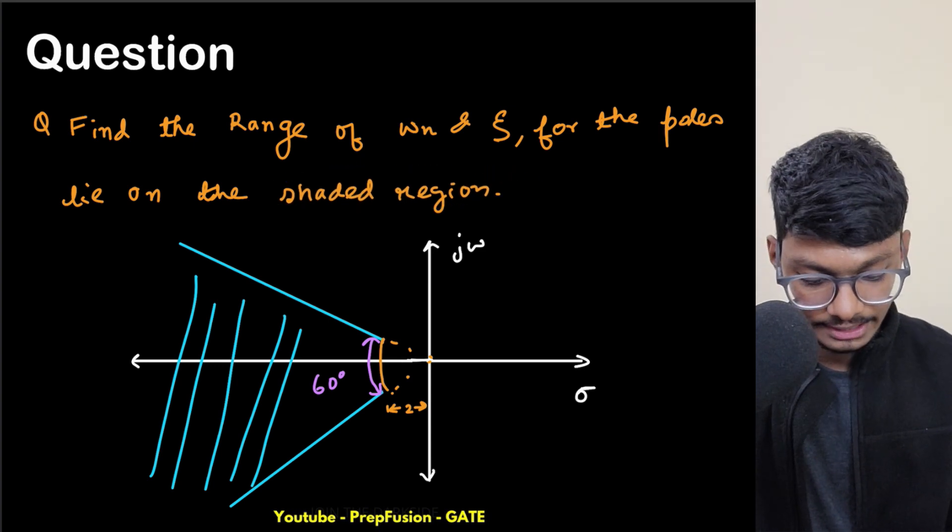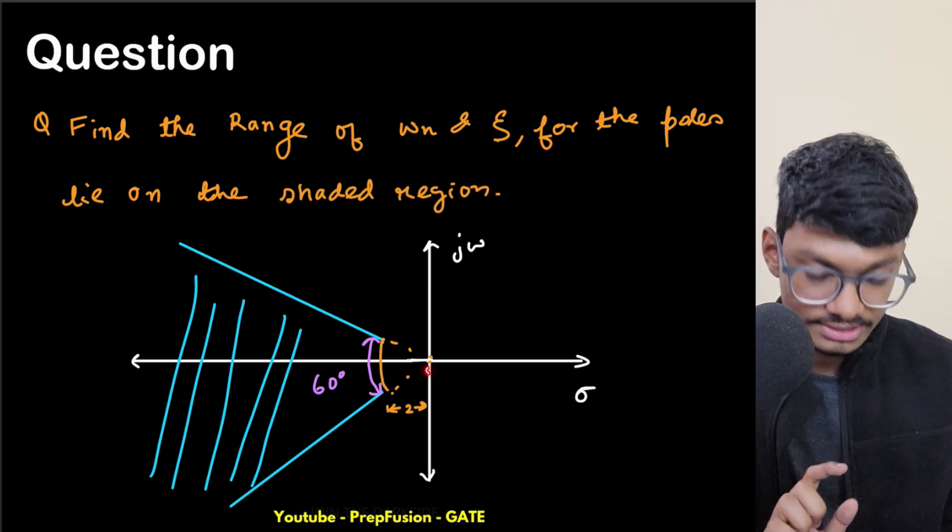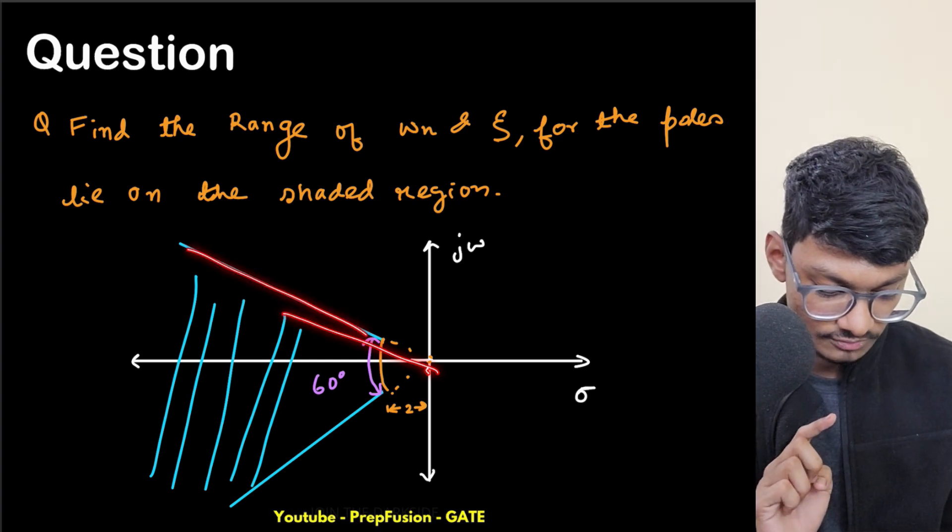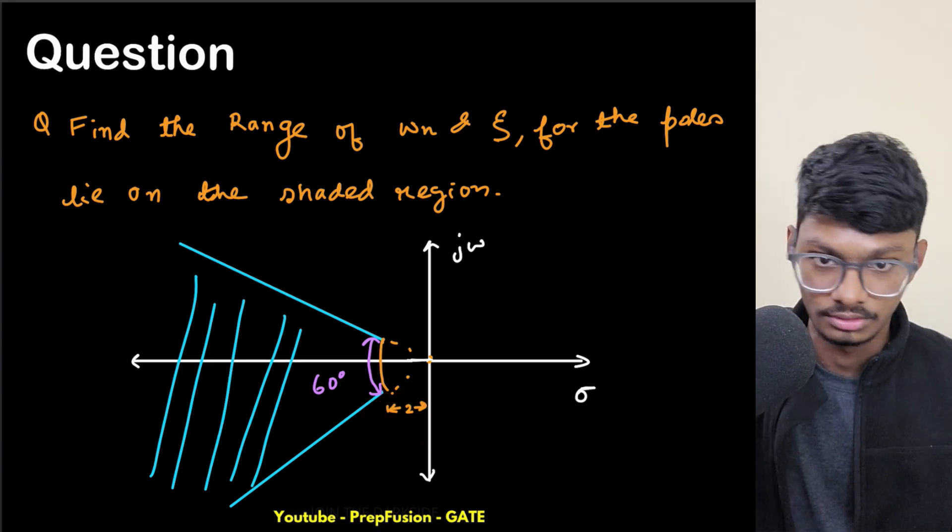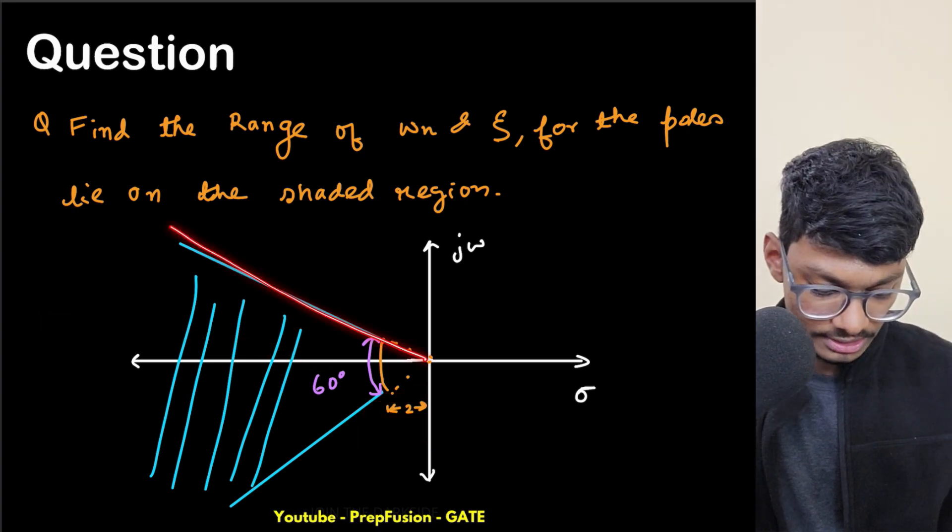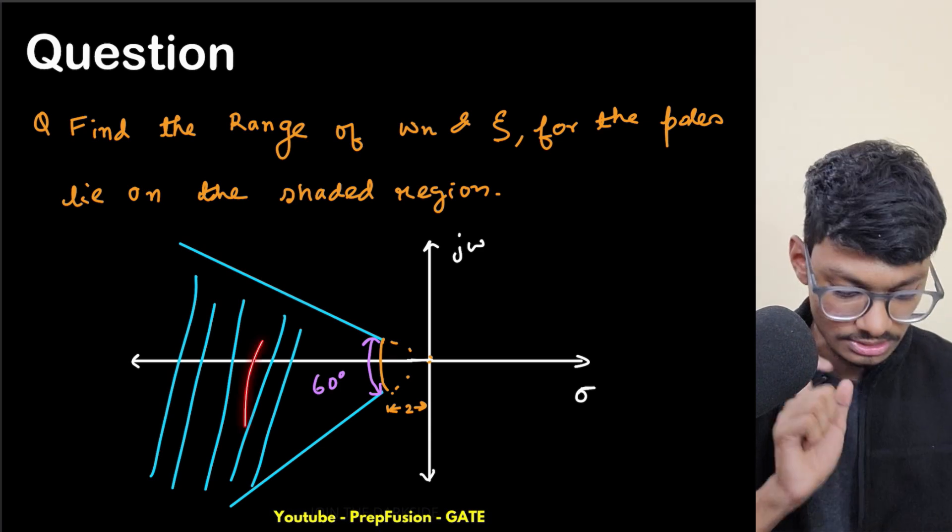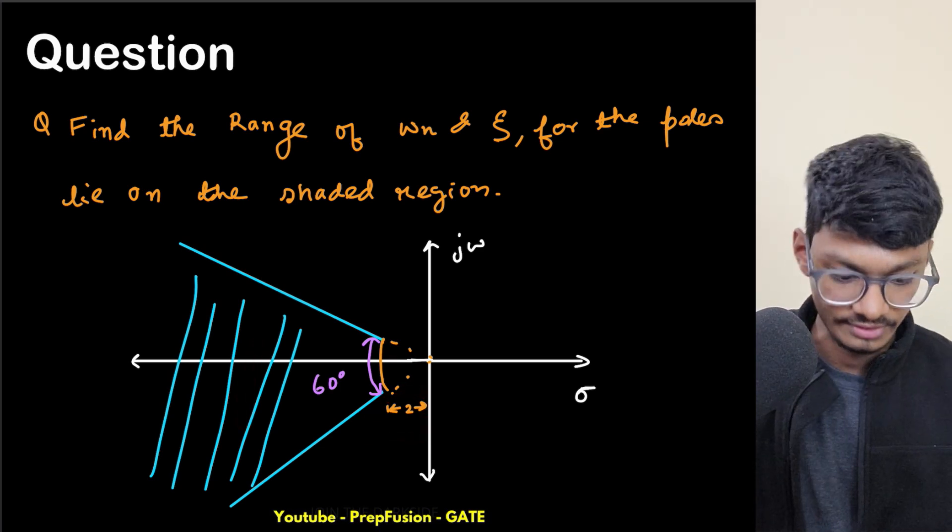One thing we know is that this distance from the origin is varying. This distance is two, they have given us two, and it is increasing to infinity. So this is like an arc itself and the radius of the arc is varying from two to infinity. So r is greater than two to infinity.